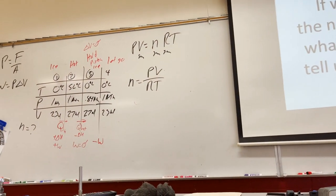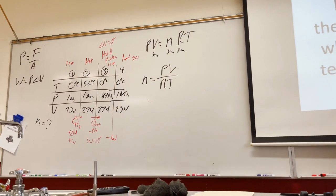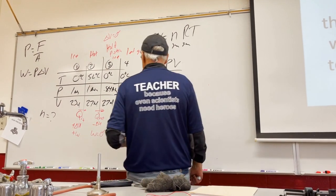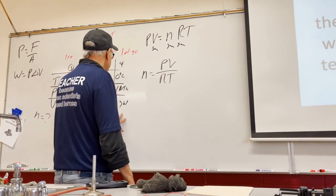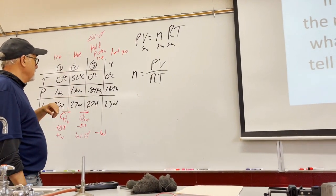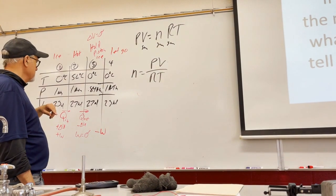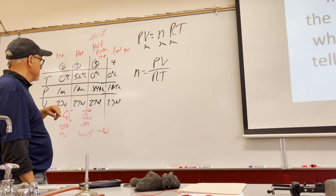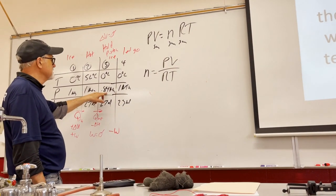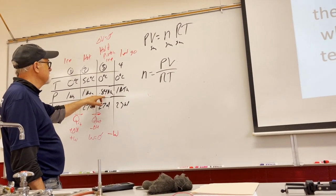It's a closed system — the container won't let any air in or out. For state three we could calculate and double-check our pressure using PV=nRT.